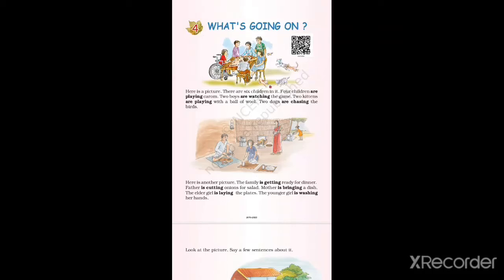Hello children, welcome back once again to our class. Today we are going to do revision from the book Raindrops, Unit 4: 'What's Going On Here.' We have discussed earlier that we are going to read what is going on.